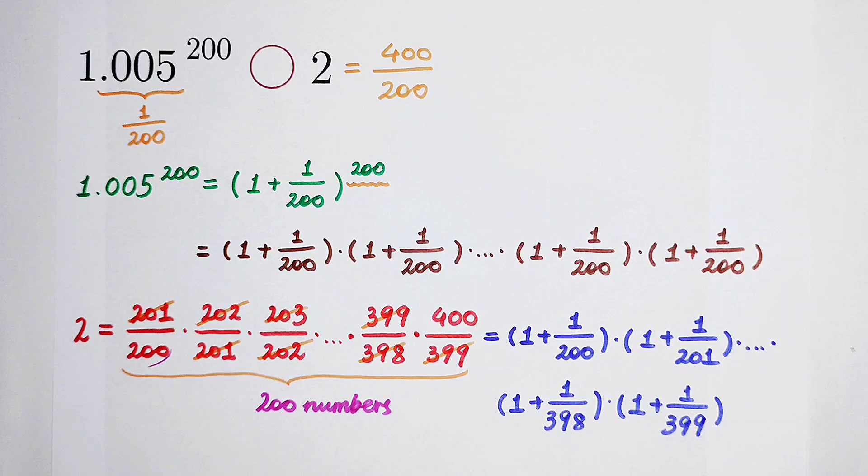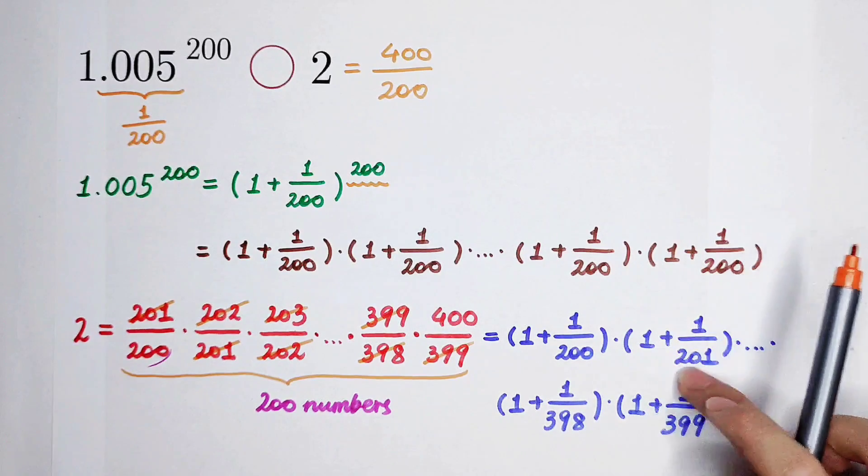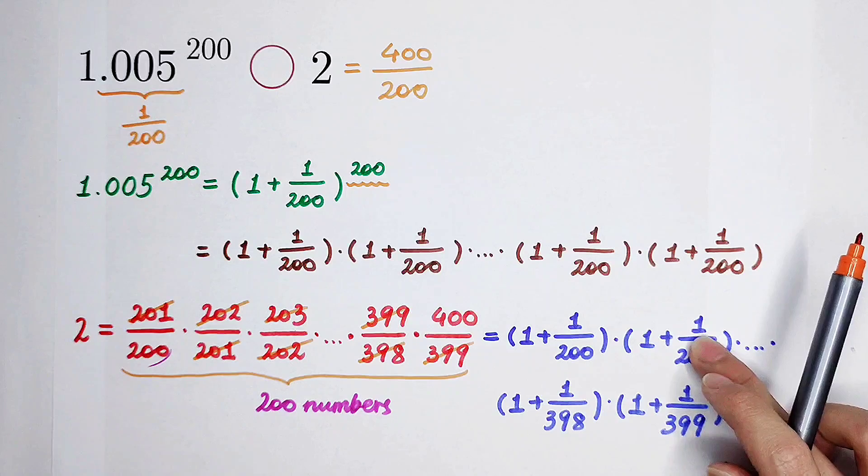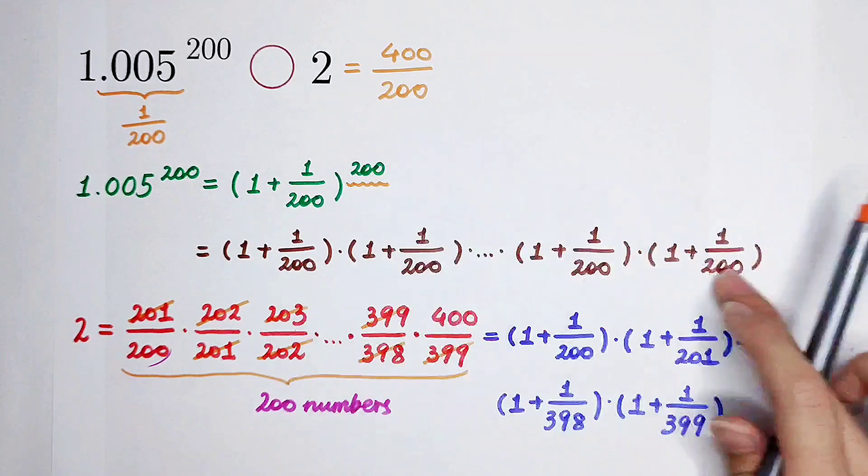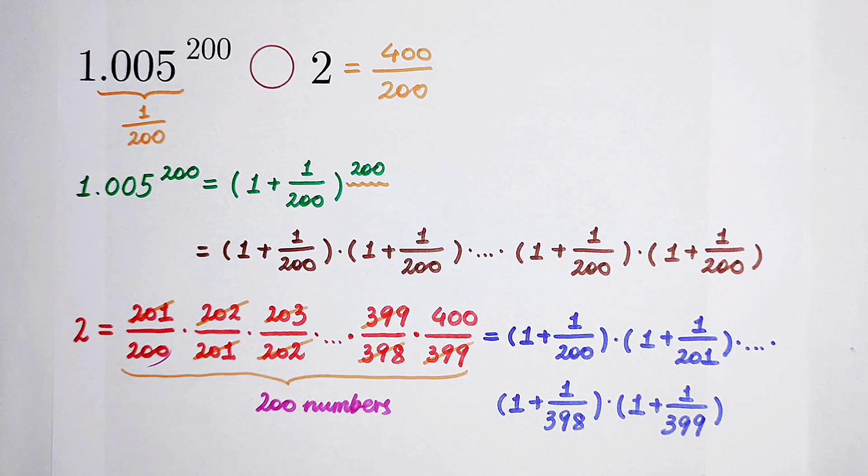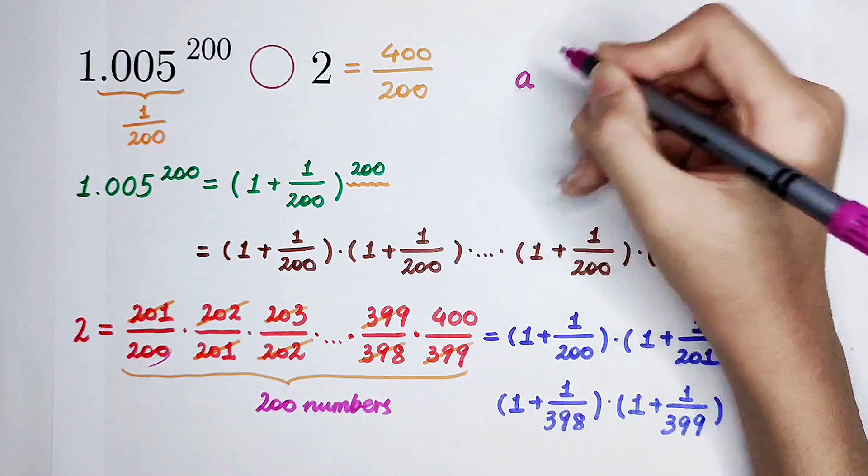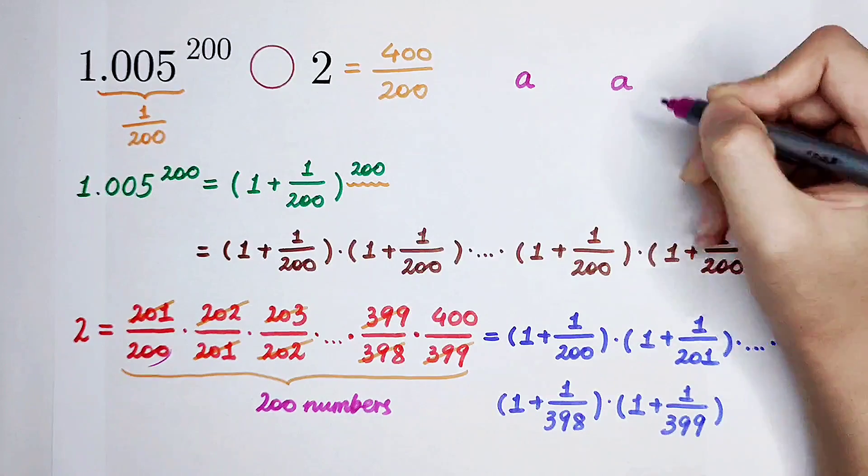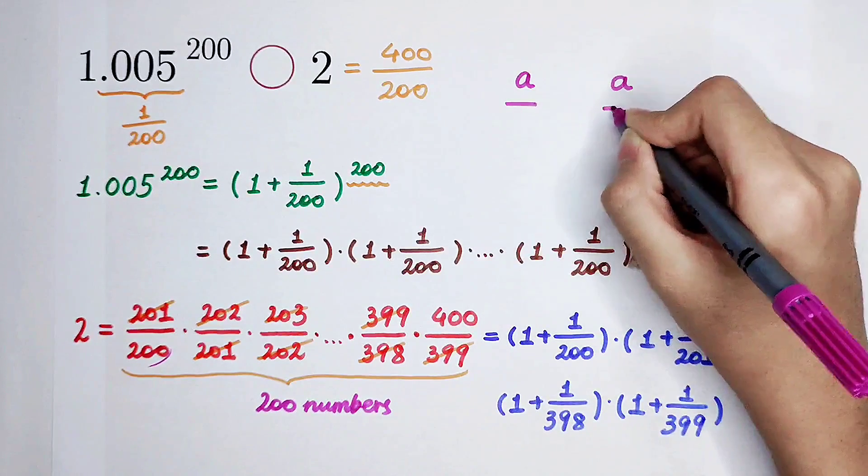And then what should we do? Since from the second factor, the denominators are always bigger than the denominators from here. But, you should remember that when two fractions have the same numerator, for example a,